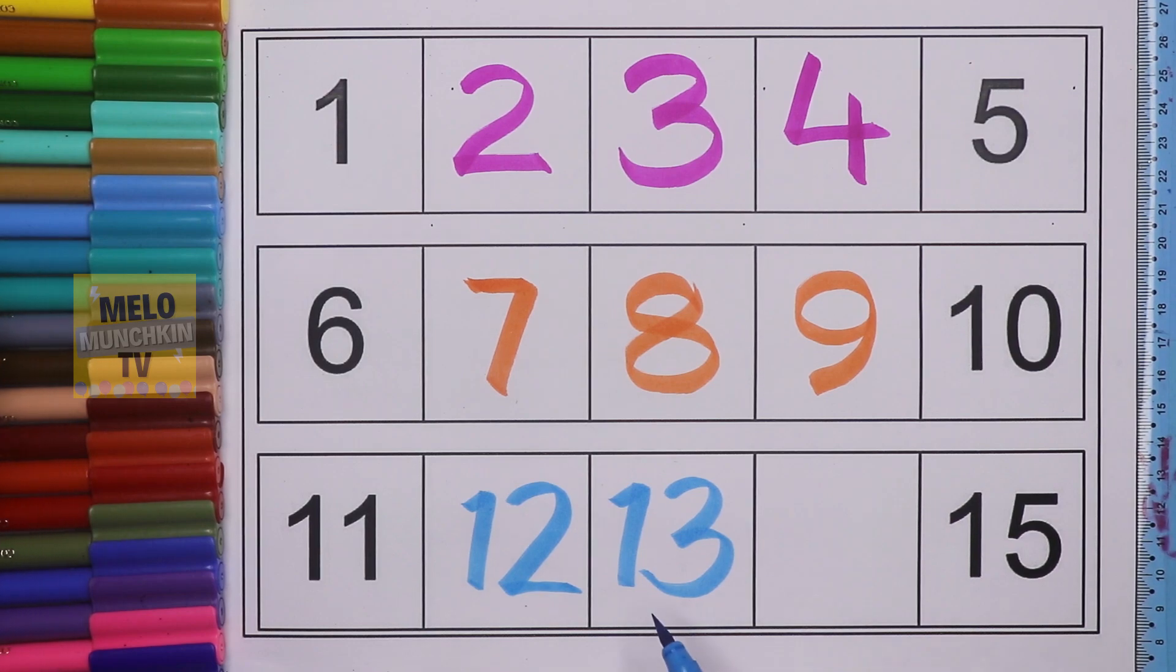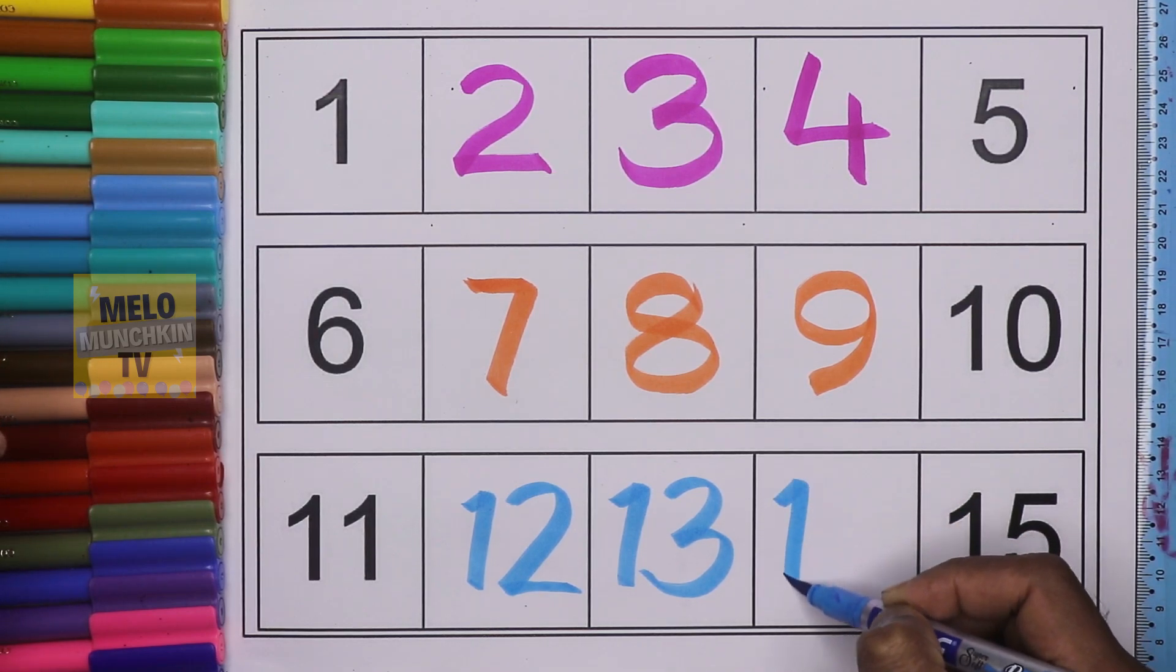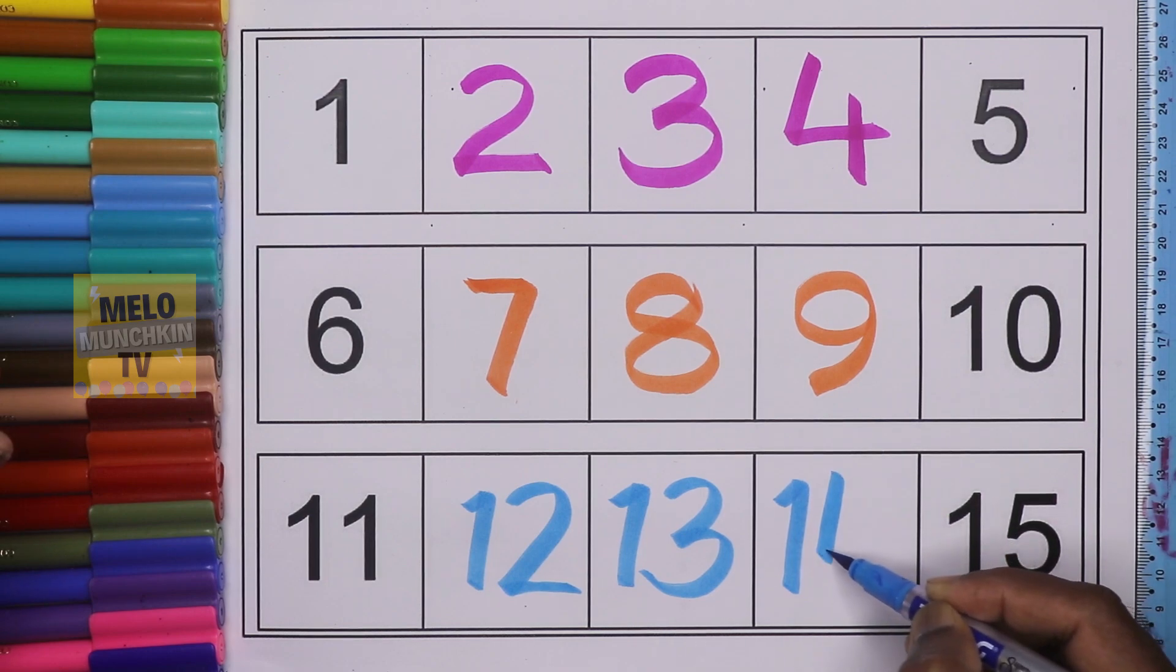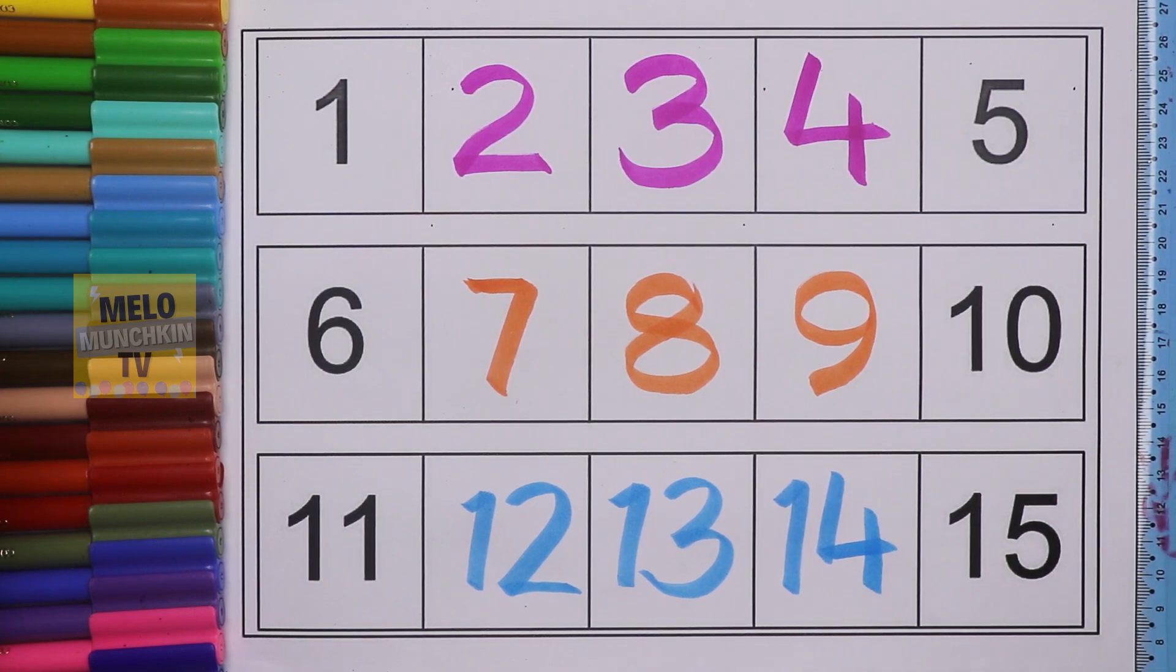What comes after 13 but before 15? It is 14, F-O-U-R-T-E-double E-N, fourteen. So the missing numbers between 11 and 15 are 12, 13, and 14. Let's count once again.